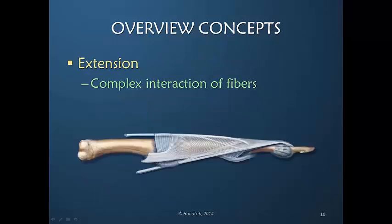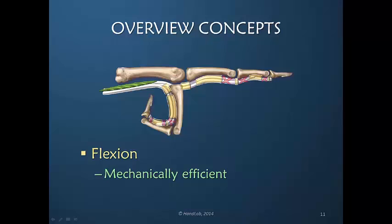Extension of the human finger is a complex interaction of multiple fibers. We spoke about this in the first course in this series, where the fibers move in relationship to one another. Flexion, however, we would assume is much simpler because we have one flexor muscle tendon unit from origin to insertion that drives finger flexion.